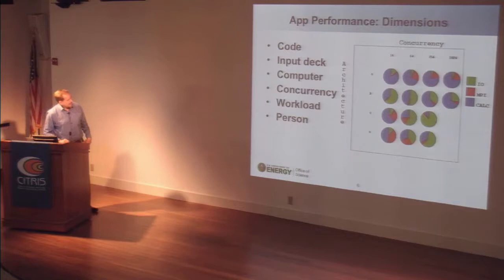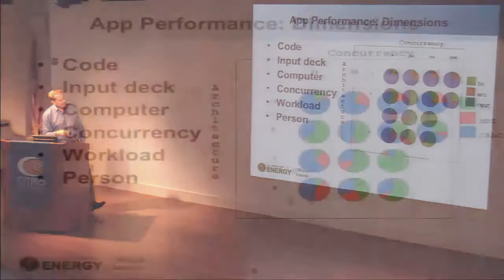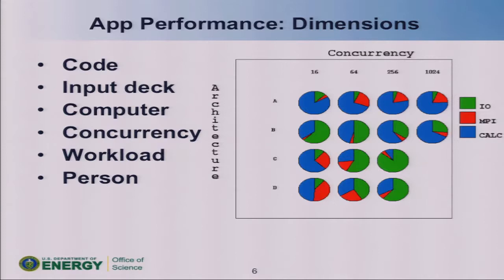This is some performance information from one code run across concurrencies and architectures. What are the dimensions to performance? Performance certainly depends on the code, the input deck, where you run it, how many cores you run it on, what else is running on the machine. Even the person matters — give two people the same assignment to run a code and see what numbers they get. How you compile, your environment variables, how you submit the job — there are a lot of factors. Concurrency and architecture are two of the more clear-cut elements.